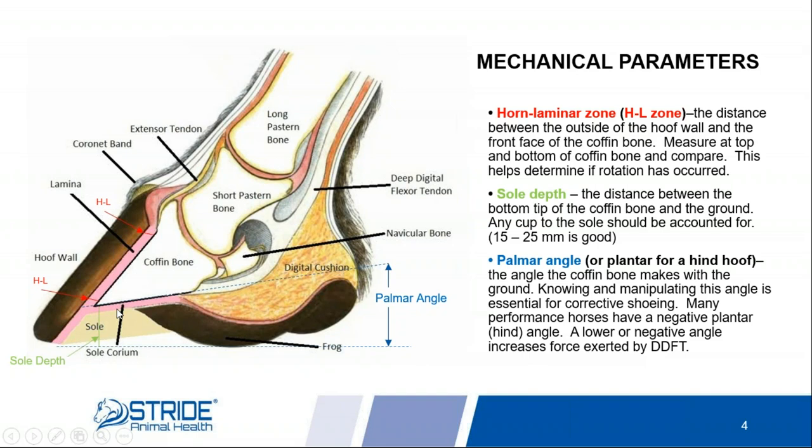I have looked at many radiographs where the palmer angle is very steep and people think the horse is foundered, but the horn laminar measurements are the same at the top and the bottom — so the coffin bone is not rotated. You just have an upright foot with an upright coffin bone.